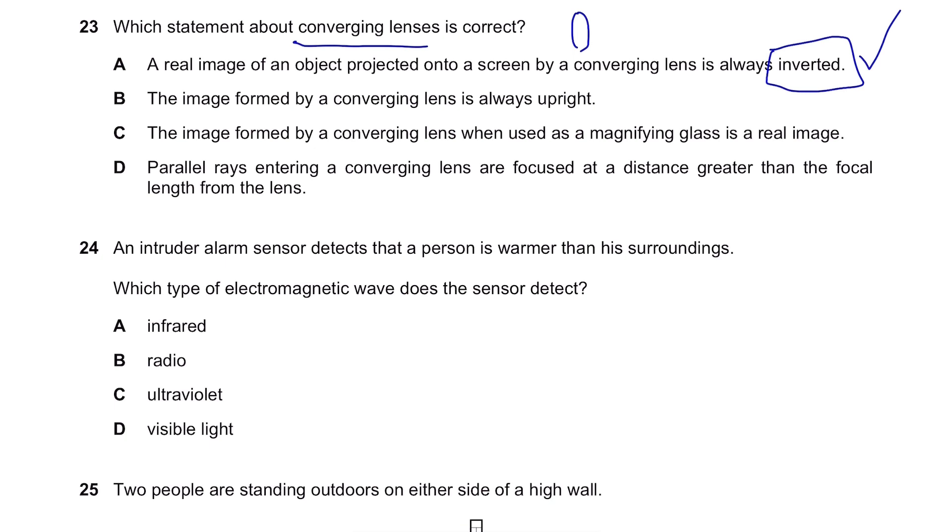The image formed by a converging lens is always upright? Nope. We just said that it's inverted so obviously this is not the answer. The image formed by a converging lens when used as a magnifying glass is a real image? Nope. It's a virtual image.